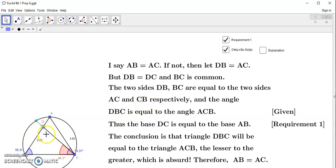So the two sides DB and BC are equal to the two sides AC and CB, respectively. So this is the case because we're assuming that DB is equal to DC.